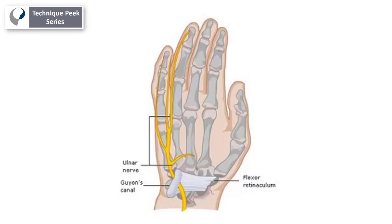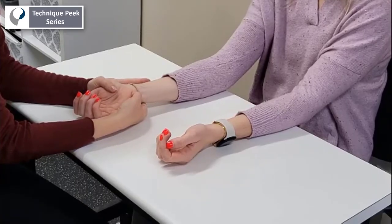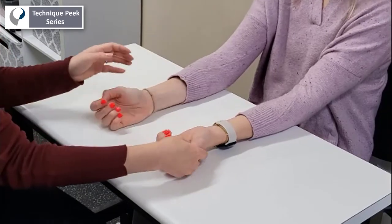The ulnar nerve can also be compressed distally at Guyon's canal. Percussion and compression in this area can also be used to determine the compression of the ulnar nerve at this level.